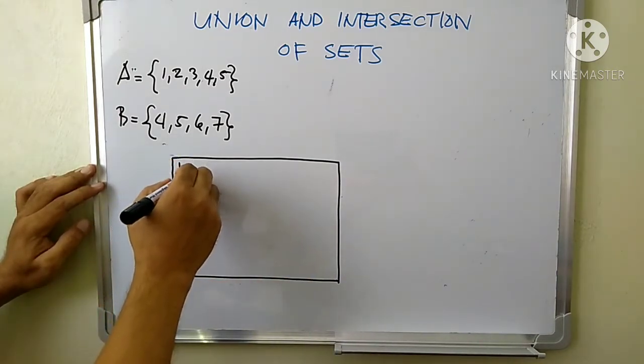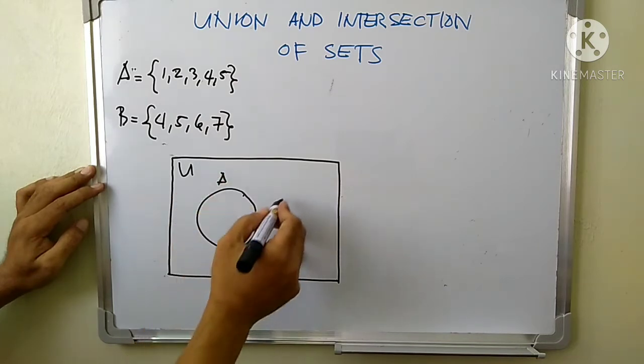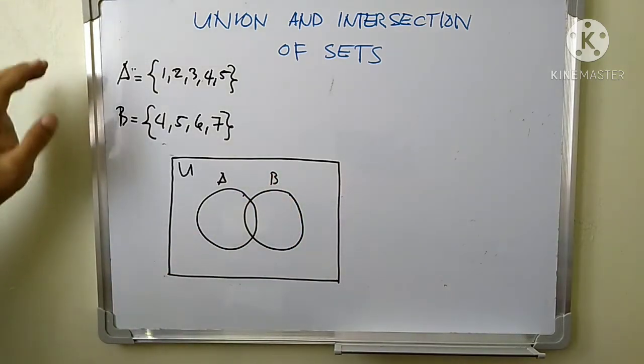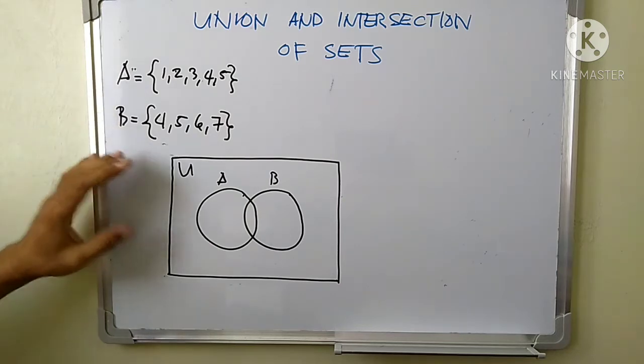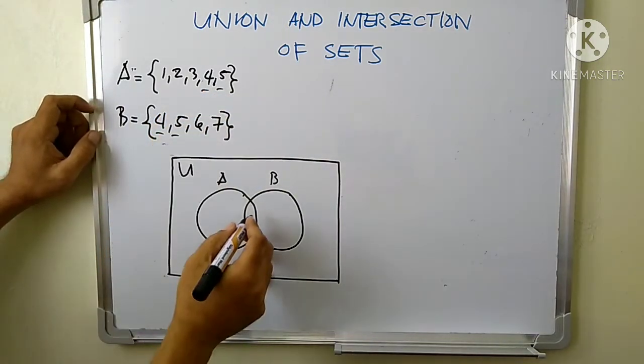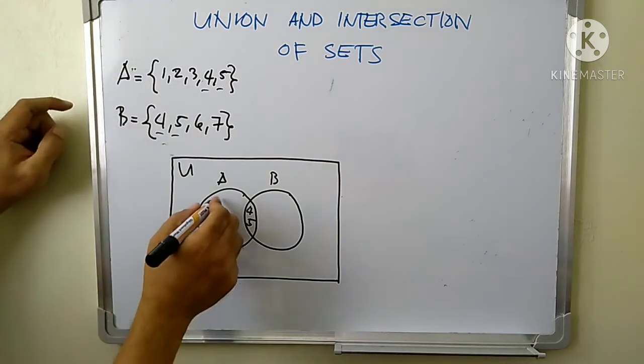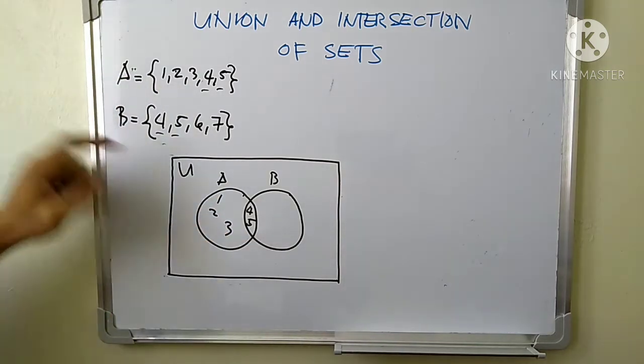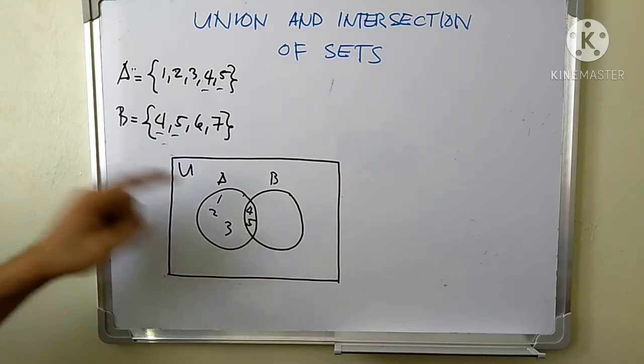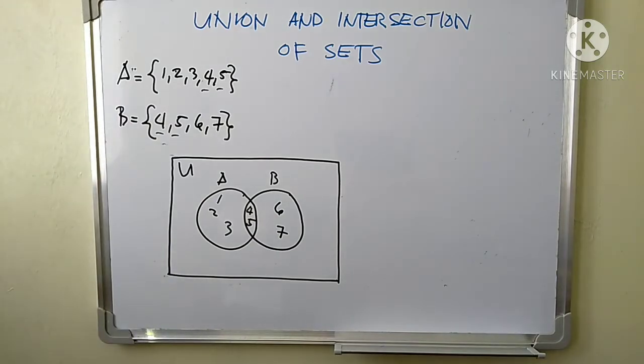So let us consider this as our universal set and we have set A, we have set B. So let us plot the elements of set A and set B in our diagram. A and B have elements in common and it is 4 and 5, so we write that here. And those remaining in A, write it here, so we have 1, 2, 3. And for B we have 6 and 7.